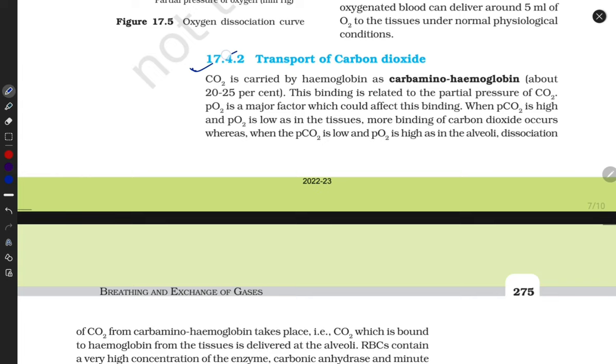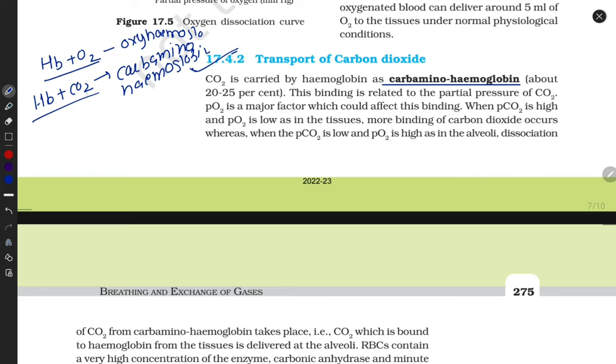Now let's talk about transport of carbon dioxide. We all know that hemoglobin binds with oxygen and we call it oxyhemoglobin. Hemoglobin also binds with CO2 and we call it carbamino hemoglobin. Hemoglobin can also bind with the very dangerous gas carbon monoxide, and we call it carboxyhemoglobin, which is very toxic. This binding has the highest affinity. Hemoglobin shows the highest affinity towards carbon monoxide, then the second highest affinity towards oxygen, and third highest affinity towards carbon dioxide.